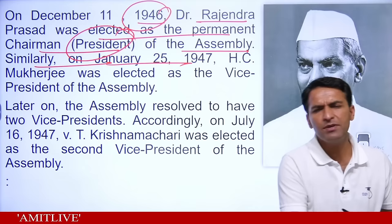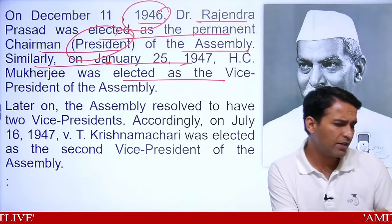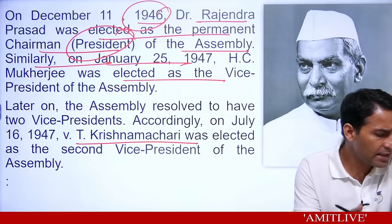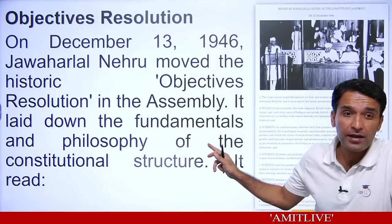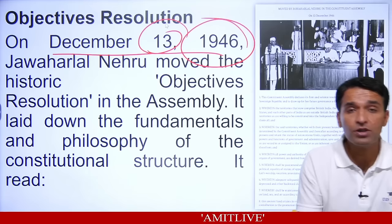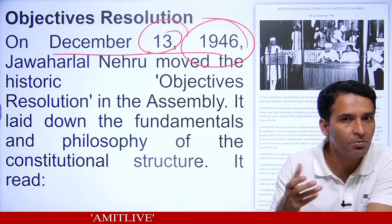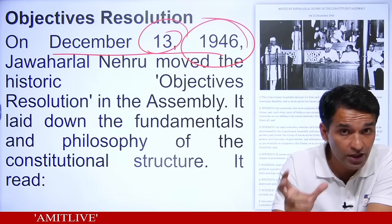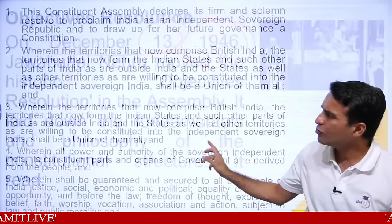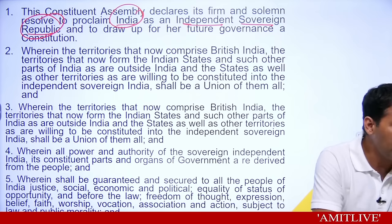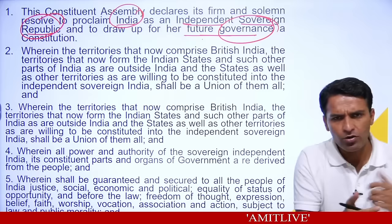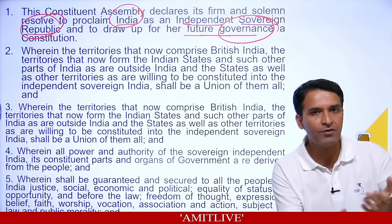On December 13, 1946, Jawaharlal Nehru brought a proposal before the Constituent Assembly called the Objectives Resolution — which outlined the objectives of the Constituent Assembly. It stated that the Constituent Assembly would make India an independent and sovereign republic, and frame a constitution for the future governance of the country. It was introduced by Jawaharlal Nehru on December 13, 1946, also called the Objectives Resolution.